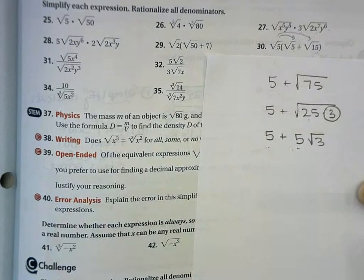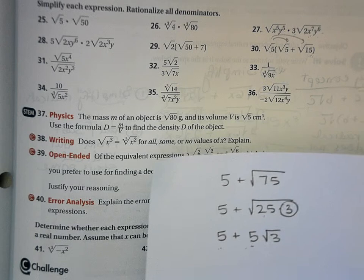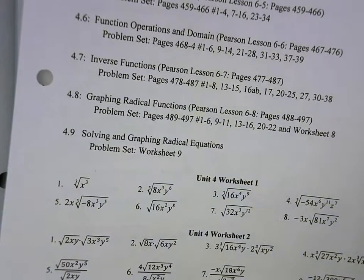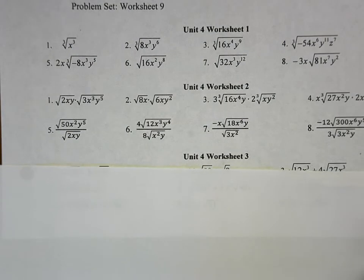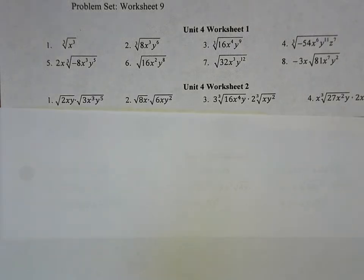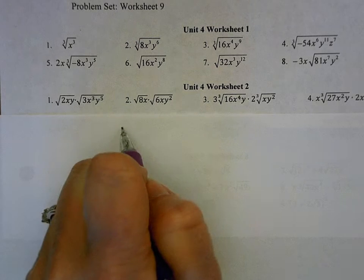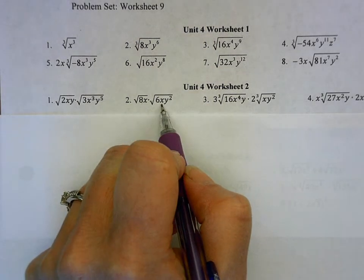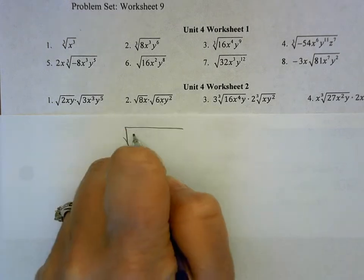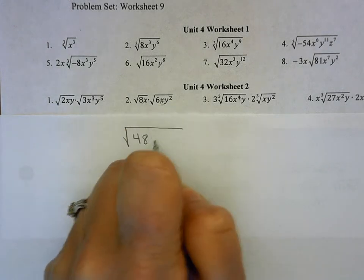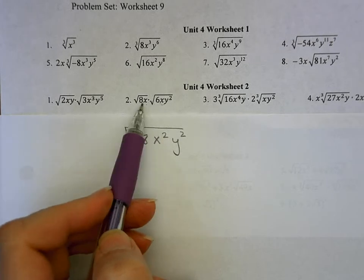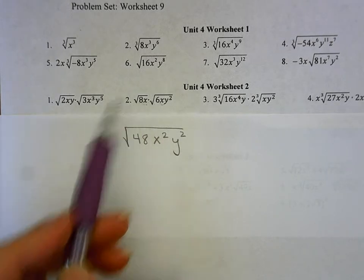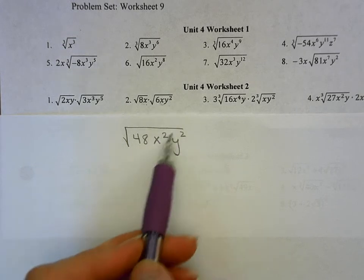That's Unit 4 Objective 2. Now let's take a look at some Worksheet 2 problems. For question number 2 on Unit 4 Worksheet 2, these numbers are pretty small so instead of simplifying first I'm just going to multiply. 8 times 6 is 48, giving me x squared and y squared. Because x is an odd power, x can't be negative — otherwise this would be imaginary — so x has to be positive. But y could be positive or negative, so I'm going to need absolute value around y, but not around x.